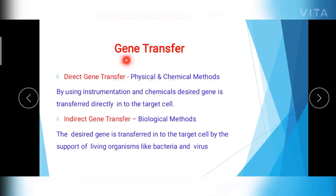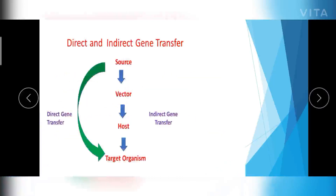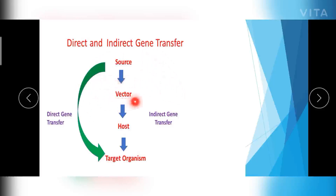Dear Learners, let's study about the gene transfer methods used in the production of transgenic animals. There are two methods: one is direct gene transfer and another one is indirect gene transfer. During direct gene transfer, the desired gene is directly transferred from source to the target organism using either instruments or chemicals. In indirect gene transfer, you take the support of biological agents like vectors and hosts to transfer the desired gene from source to target organism.